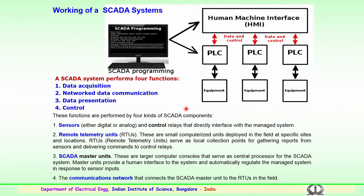The first function is data acquisition from the equipment. The second is network data communication — how the equipment data through sensors is communicated to programmable logic controllers and further to the SCADA machine or SCADA server. The third is data presentation — the data obtained is presented, monitored, and analyzed. The fourth is control — based on the data available, suitably analyzed, proper control management is done. These four functions are performed by the four kinds of SCADA components.